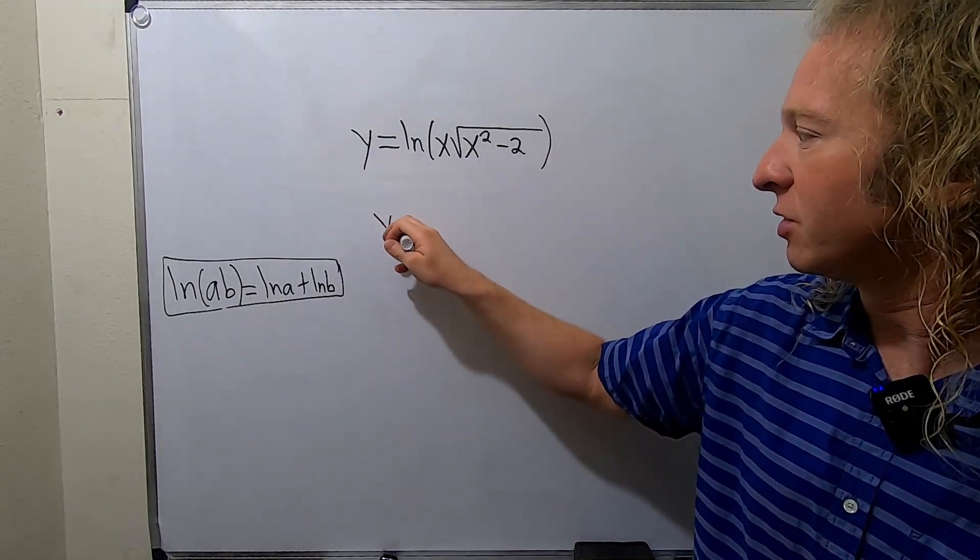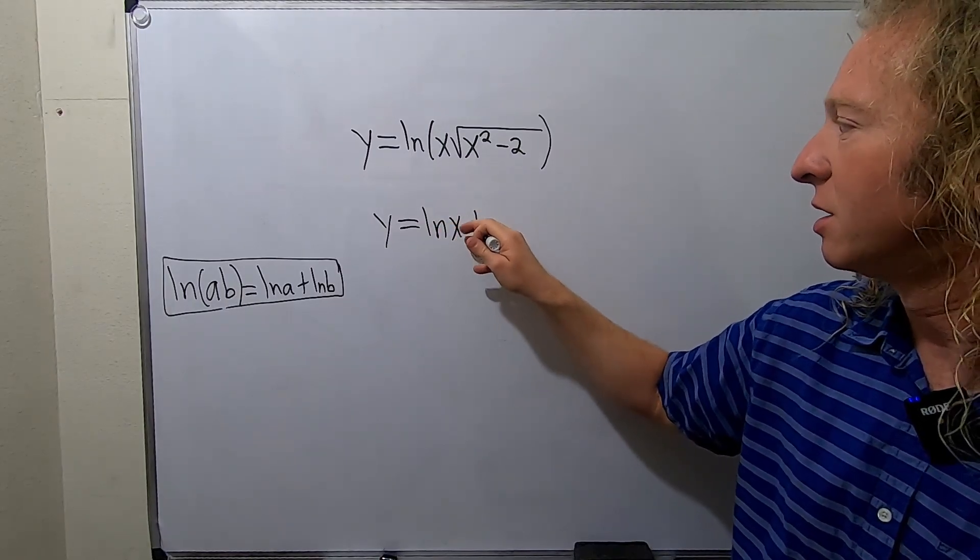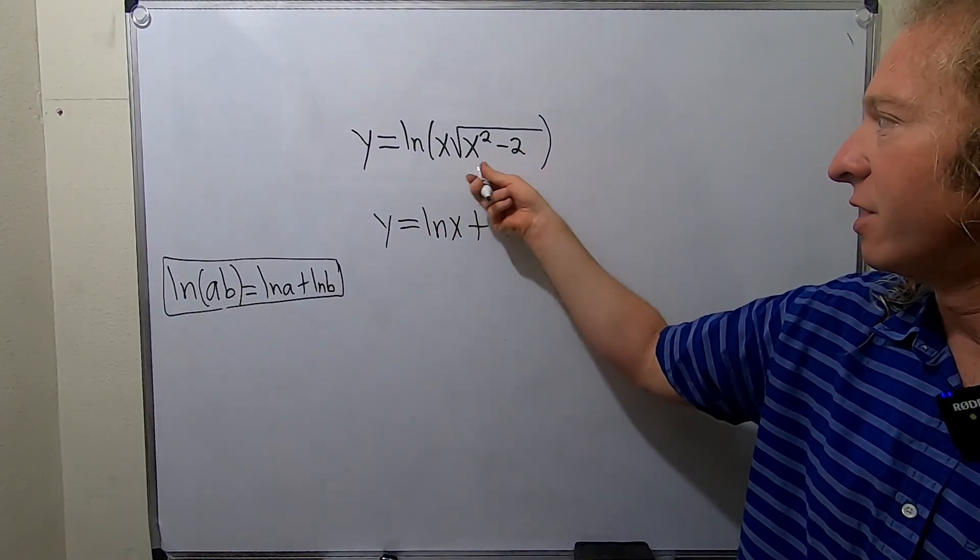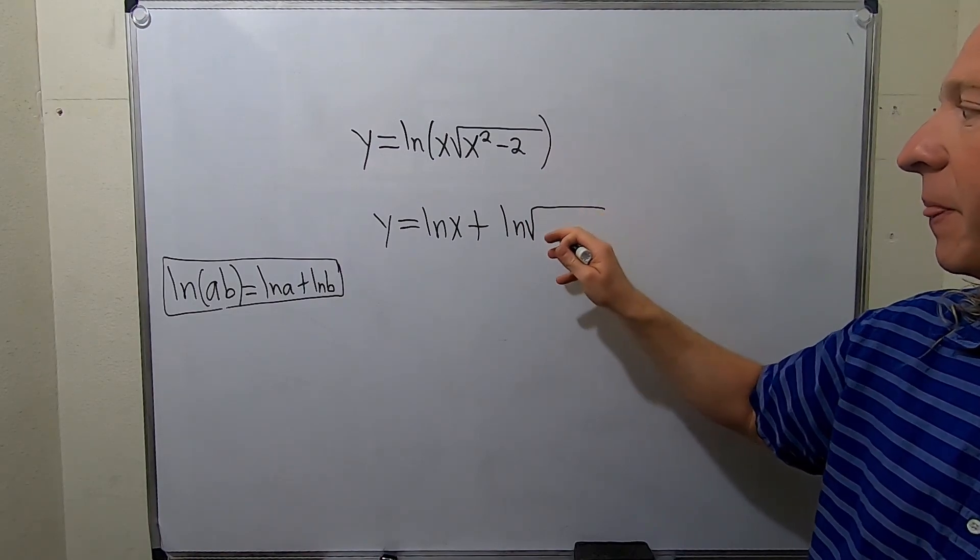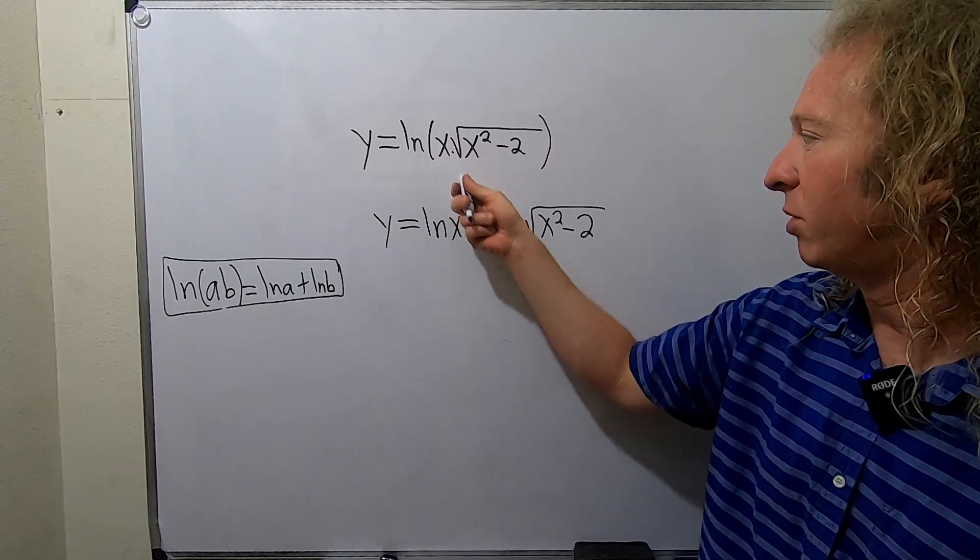So this will be y equals, it's still y, we're not taking the derivative yet, natural log of x plus the natural log of this stuff here. So square root x squared minus 2. So the times became plus.